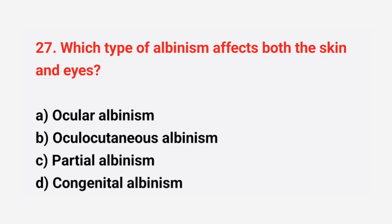Question number 27: Which type of albinism affects both the skin and eyes? The right answer is option B, oculocutaneous albinism.